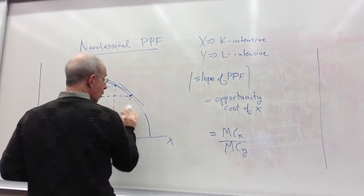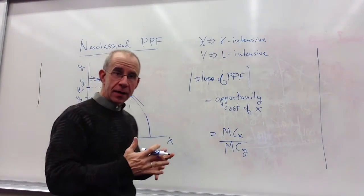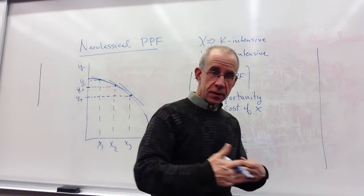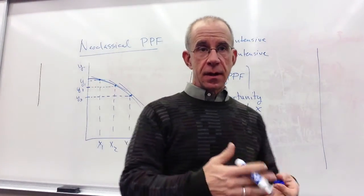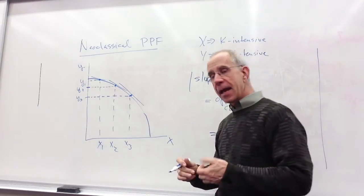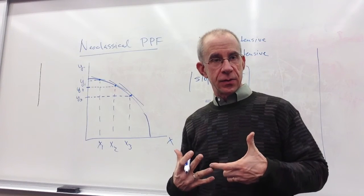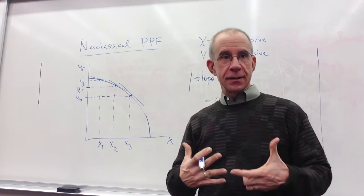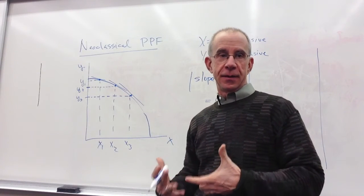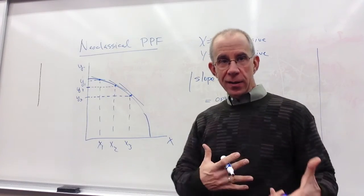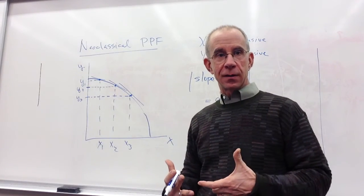Now, as you produce more and more X, that Y industry is starting to give up labor and capital. And the combinations of labor and capital that the X sector is receiving is increasingly inappropriate to what the X sector would like.